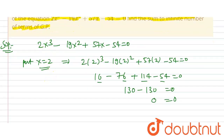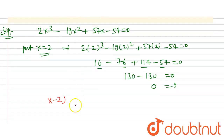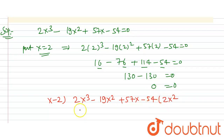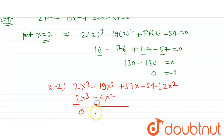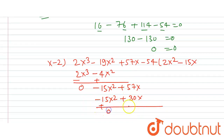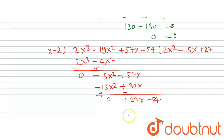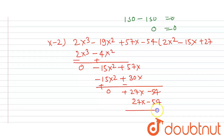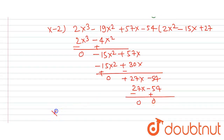Let's find the other two roots by dividing the equation by (x minus 2). Dividing 2x³ minus 19x² plus 57x minus 54 by (x minus 2): we get 2x² as the first term, giving 2x³ minus 4x², then subtracting to get minus 15x² plus 57x. Next we get minus 15x² plus 30x, subtracting to get 27x minus 54.